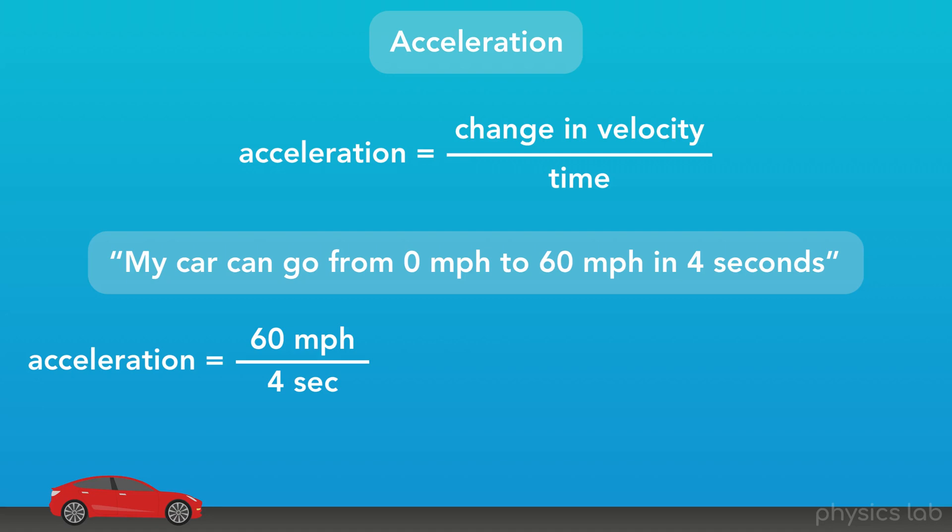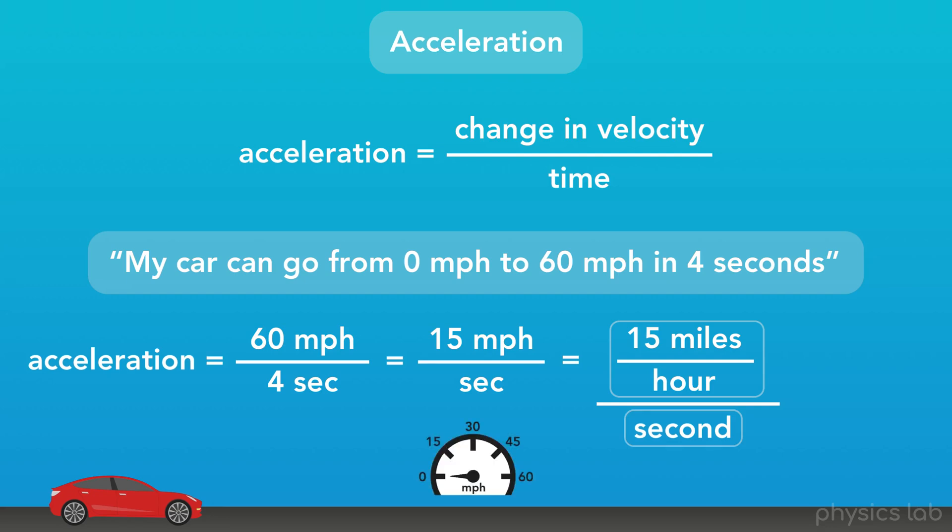60 divided by 4 is 15, so the acceleration of their car is 15 mph per second. That's the same as saying the car can go 15 mph faster every second. When the car is accelerating, after every second that passes, the speedometer moves up another 15 mph.